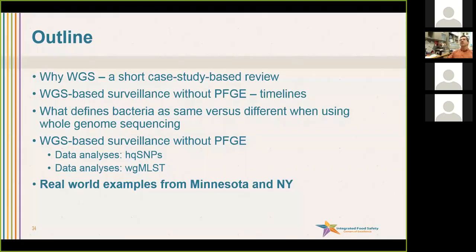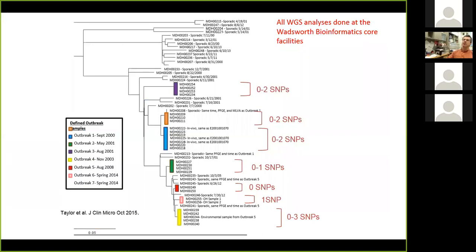For the last few slides I'm going to focus on some real-world examples from both Minnesota and New York showing how this has been used. I'm going to sort of take out the parallel PFGE part — because all of this still had parallel PFGE — but you could take out the PFGE data and basically see what it would look like in the whole genome sequencing-only world.